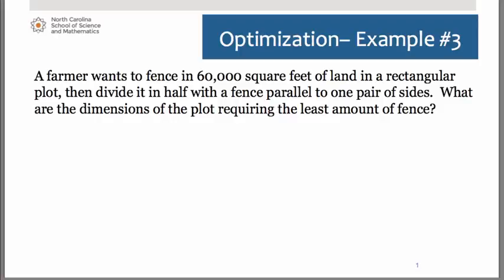Here we have a farmer who wants to fence in 60,000 square feet of land in a rectangular plot, then divide it in half with a fence parallel to one pair of sides. We are asked to determine what the dimensions are of the plot that will require the least amount of fence.